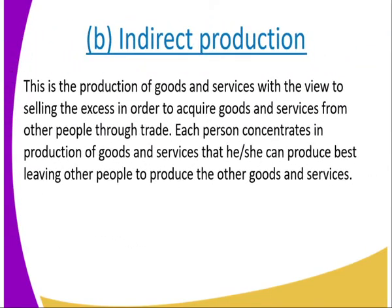Number two: we look at indirect production. This is the production of goods and services with a view to selling the excess in order to acquire goods and services from other people through trade. Each person concentrates on the production of goods and services that he or she can produce best, leaving other people to produce other goods and services.